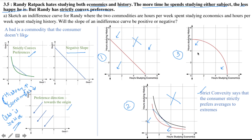Lastly, we have case 3. The preferences are again towards the origin, it has a negative slope, and let's check for strict convexity. If I choose any two consumption bundles on the curve and calculate the weighted average bundles, then randomly choose any weighted average bundle and try to draw the indifference curve passing through it, I see that this weighted average bundle gives a higher level of satisfaction to Randy since his preference direction is towards the origin. At this new indifference curve, Randy has to give fewer hours to both history and economics, meaning he would be better off as he hates both subjects. Thus, Randy would always prefer the weighted averages to the extremes — hence these are strictly convex preferences.